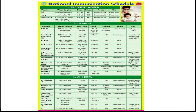Vitamin A first dose is started at 9 completed months, given together with the measles and JE vaccines. It can be given up to 5 years of age. The first dose is 1 ml, which contains 1 lakh (100,000) International Units (IU), given orally.